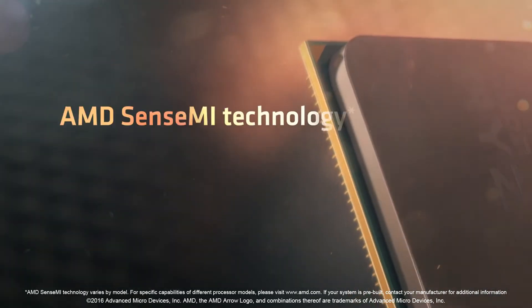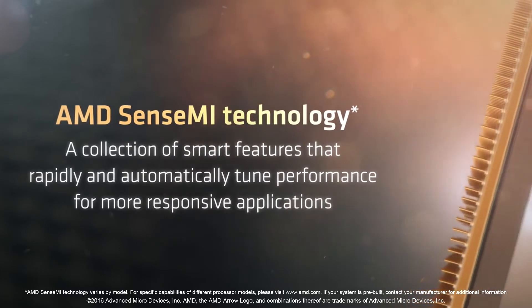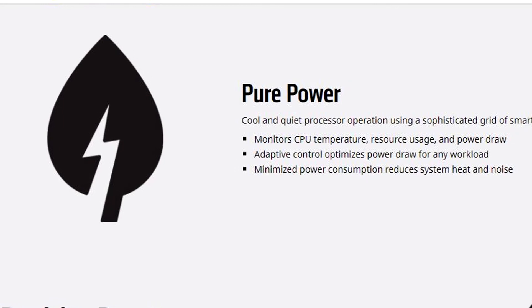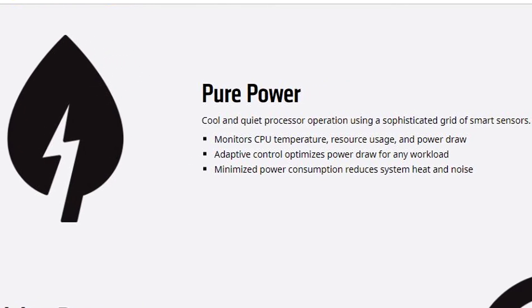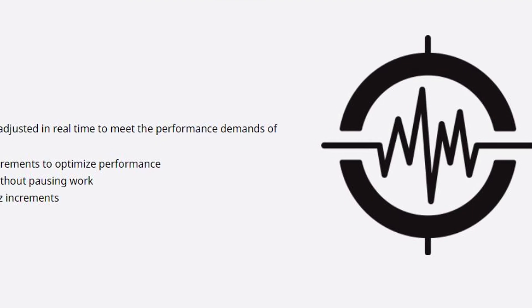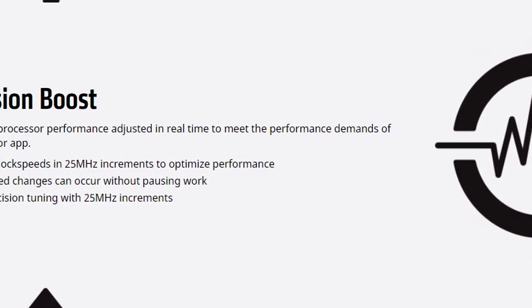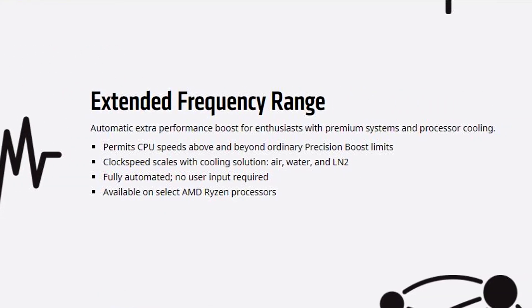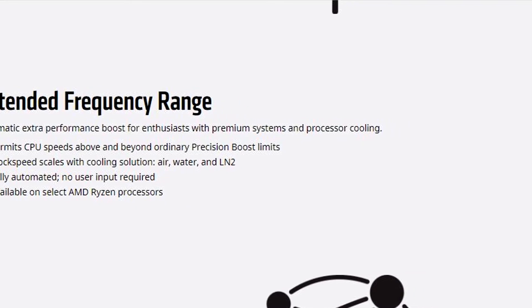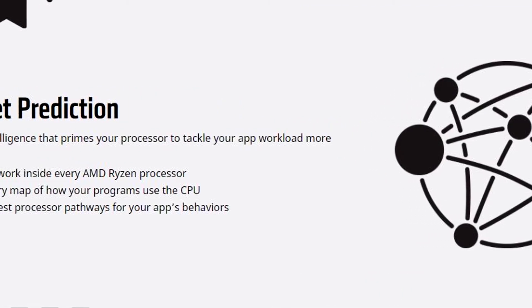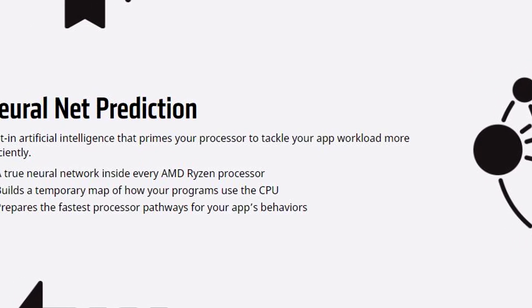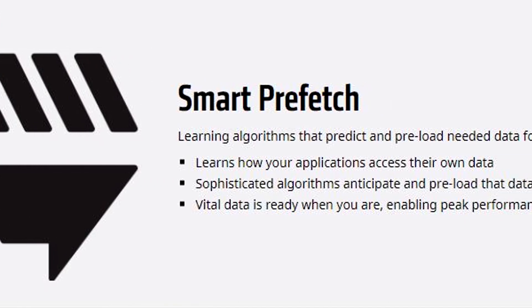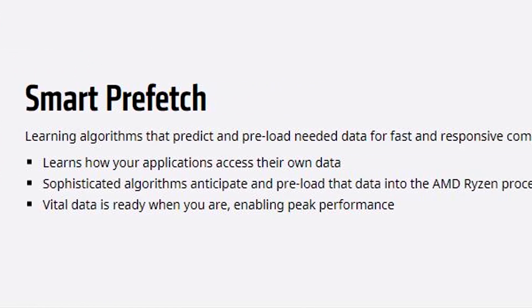AMD has introduced SenseMI technology in its Ryzen series, which includes five features to make the processor workload more efficient. First is Pure Power, which monitors and optimizes CPU temperatures, usage, and power draw. Second is Precision Boost, which fine-tunes performance by adjusting clock speed in 25 MHz increments. Third is Extended Frequency Range, also known as XFR, which we discussed earlier. Fourth is Neural Networks Precision, which includes a built-in AI to tackle usage more efficiently. And lastly, Smart Prefetch — an algorithm that learns your workload and preloads data for faster computing.